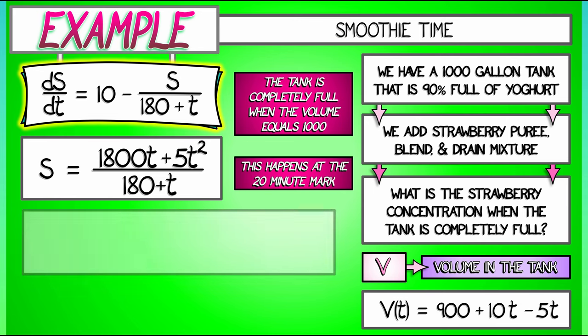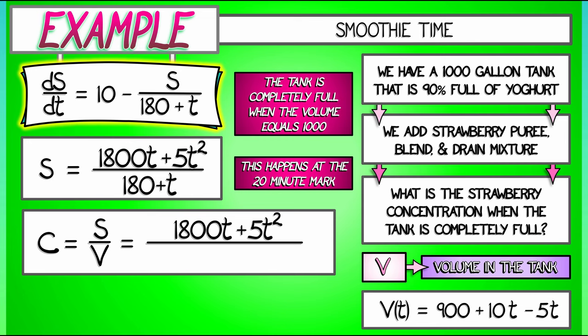So to solve for the concentration in general, we get C equals S over V. That is, in the numerator, 1800t plus 5t squared. In the denominator we have quantity (180 plus t) times quantity (900 plus 5t).